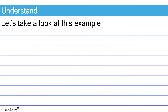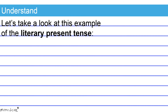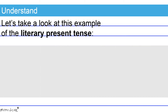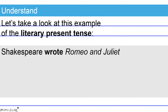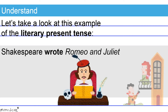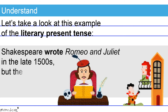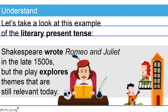Let's take a look at this example of the literary present tense. Shakespeare wrote Romeo and Juliet in the late 1500s, but the play explores themes that are still relevant today. The sentence shifts to the present tense to discuss the nature and contents of the artistic work Romeo and Juliet. This tense shift to the present is appropriate in this instance.